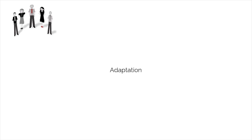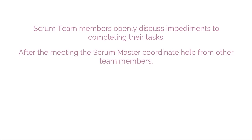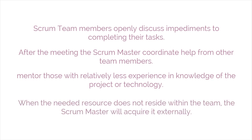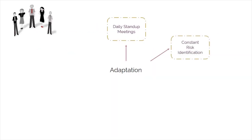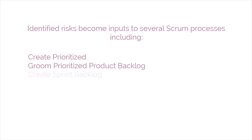Some examples of adaptation include the following. In daily stand-up meetings, Scrum team members openly discuss impediments to completing their tasks. After the meeting, the Scrum Master coordinates help from other team members. More experienced members also mentor those with relatively less experience and knowledge of the project or technology. When the needed resource doesn't reside within the team, the Scrum Master will acquire it externally. Risk identification is performed and iterated throughout the project, and identified risks become inputs to several Scrum processes, including Create Prioritized Product Backlog, Groom Prioritized Product Backlog, and Create Sprint Backlog.